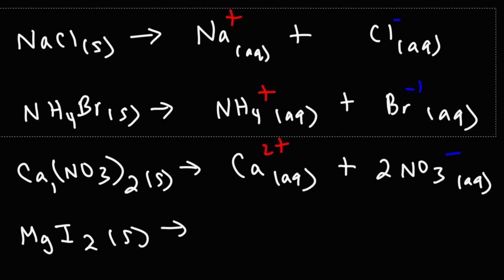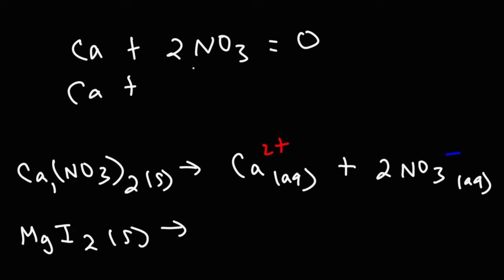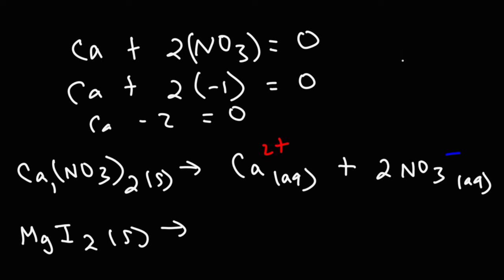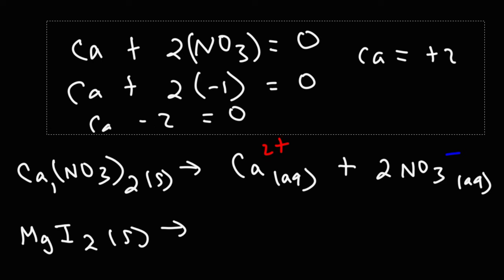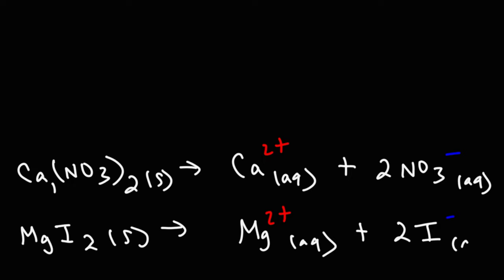If you want to calculate the charge on calcium: in calcium nitrate we have one calcium ion and two nitrate ions, and the net charge is zero. Nitrate has a charge of negative 1, so substituting: calcium + 2(−1) = 0, giving calcium a plus 2 charge. For magnesium iodide, magnesium is an alkaline earth metal just like calcium, so it has a 2 plus charge. There are two iodide ions (subscript 2), and like the other halogens, iodide has a negative 1 charge.